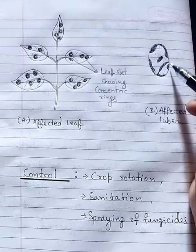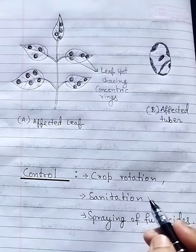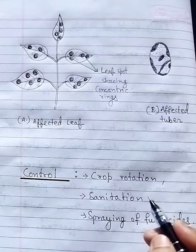Control: first, crop rotation; second, sanitation; and third, spraying of fungicides.